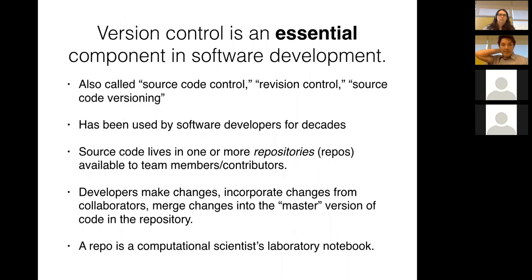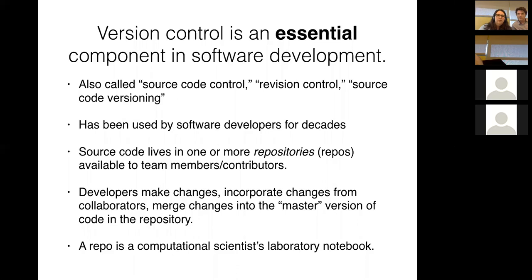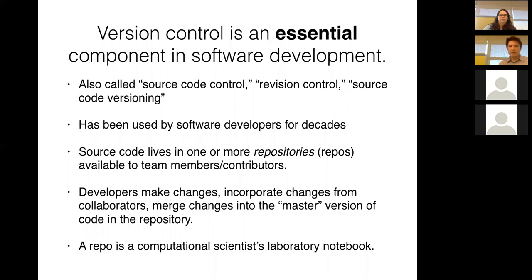Version control is something I believe is essential to software development. Someone asks: 'I've been using Git and Mercurial for a while — is there anything I should know about Mercurial to reinforce what I use?' That's a good question. Git and Mercurial have very similar feature sets. If you're successfully using Git you're getting most of the story. The differences between tools become less important if you're doing the important things.